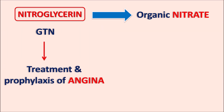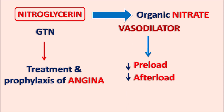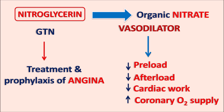Nitroglycerin is useful both in the treatment as well as prophylaxis of angina, and particularly for acute treatment, nitroglycerin is highly useful because it has a fast onset of action. But at the same time, this drug has a short duration of action, so the drug should be administered frequently to reduce the symptoms of angina. Nitroglycerin acts as a vasodilator and it produces both arterial as well as venular vasodilatation, which is why this drug can reduce both preload as well as afterload. When preload and afterload are reduced, it reduces the cardiac work, thereby cardiac oxygen consumption is reduced. In this way nitroglycerin reduces the cardiac oxygen demand, but at the same time it produces coronary vasodilatation, thereby increasing the coronary oxygen supply. In this way nitroglycerin can decrease the demand as well as increase the supply of oxygen in the case of angina.